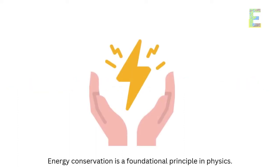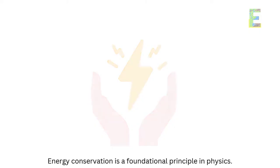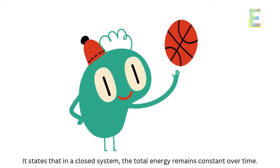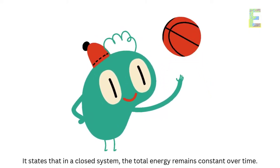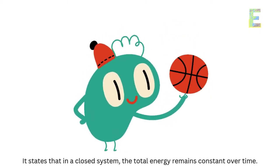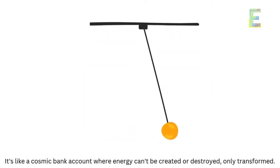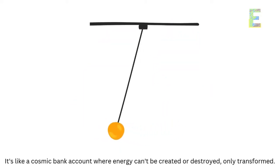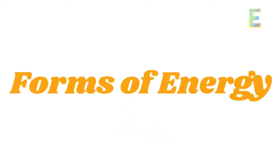Energy conservation is a foundational principle in physics. It states that in a closed system, the total energy remains constant over time. It's like a cosmic bank account where energy can't be created or destroyed, only transformed.